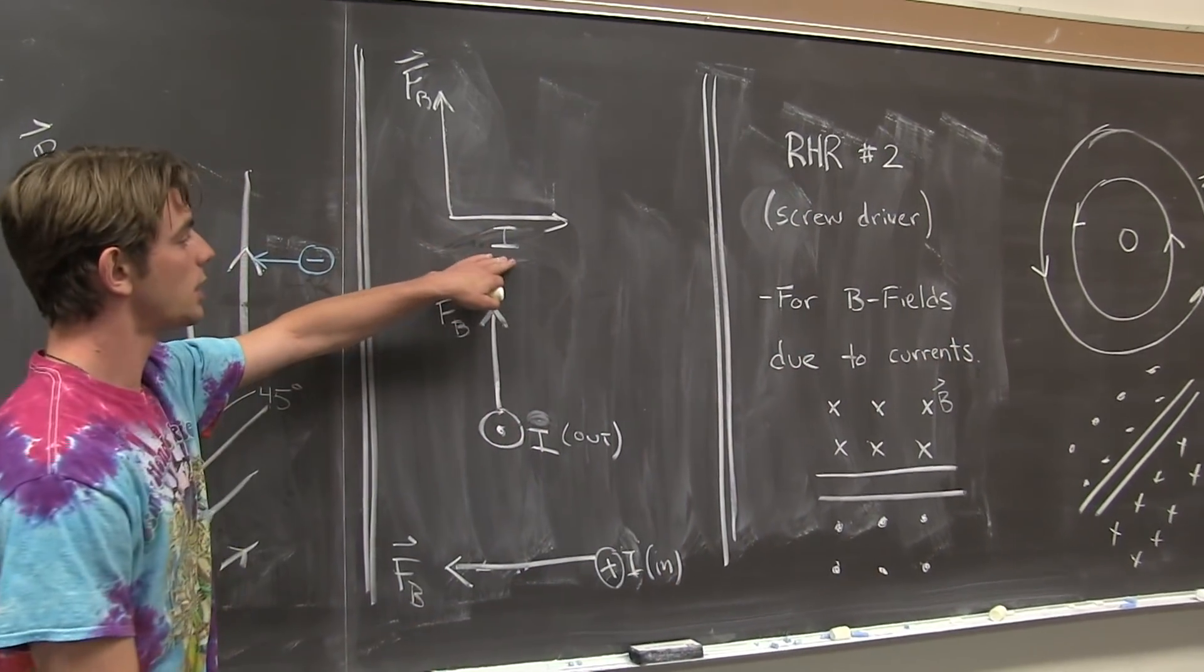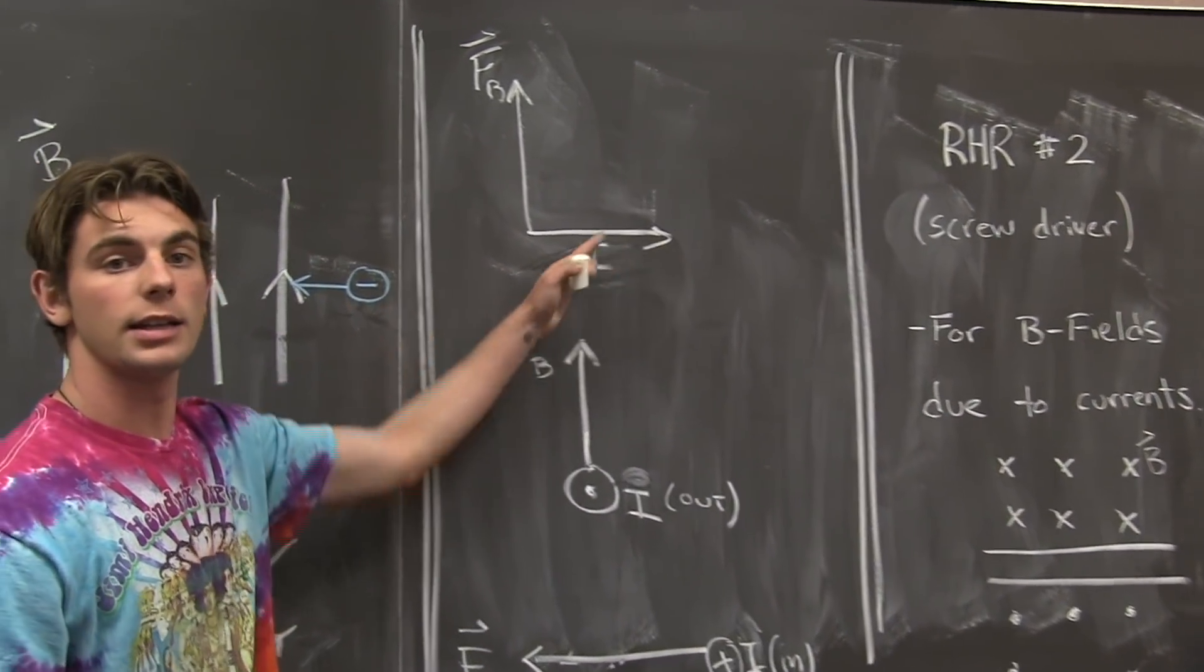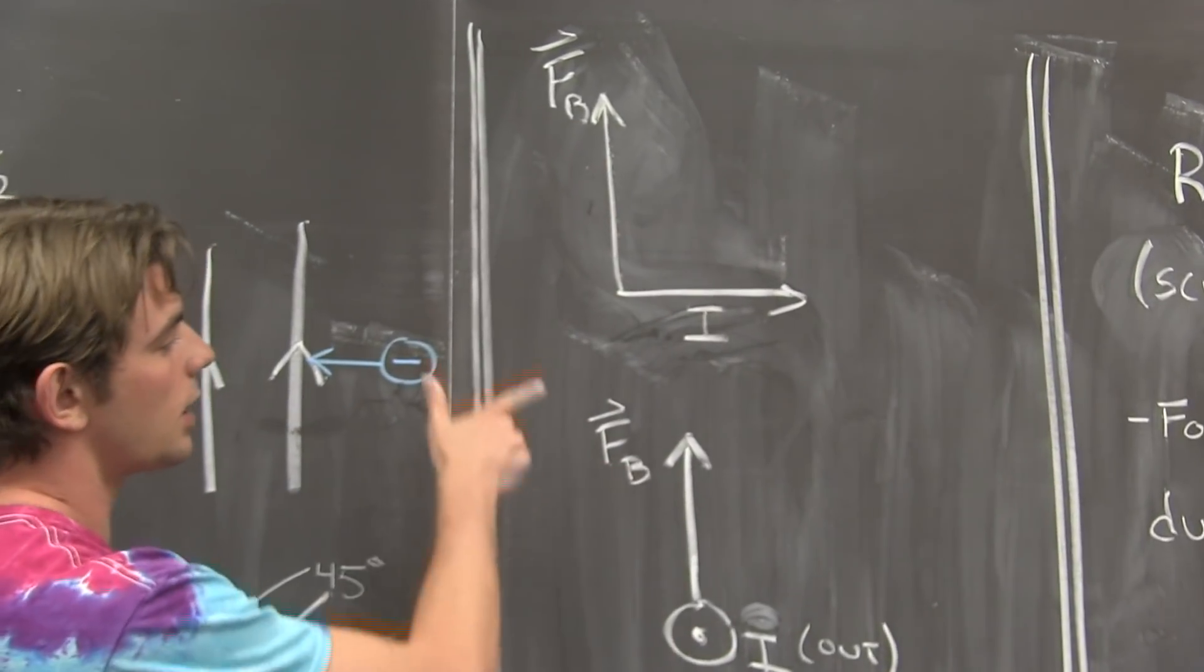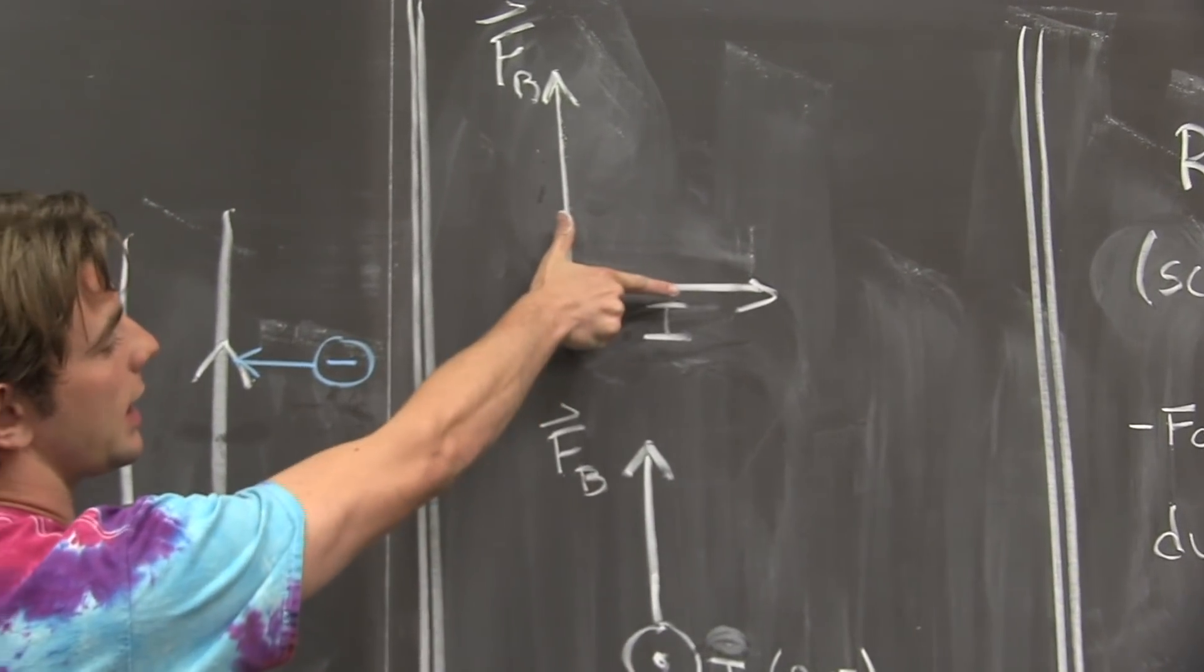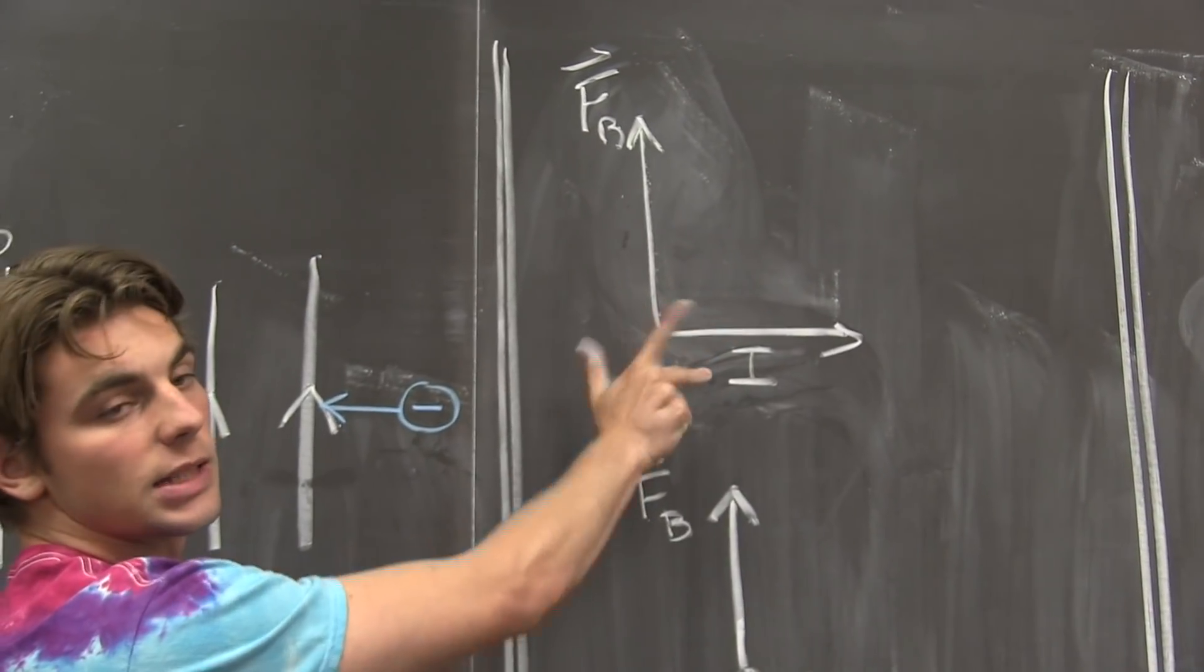So, for the first one, the current is to the right, and it is feeling a force going up. So, we line up i and f, and we see that b must be into the page.